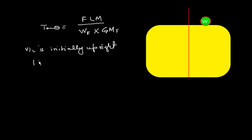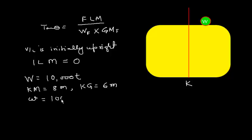That means initial list moment is zero because the vessel is upright. Here is K, the keel, and the displacement of the ship is 10,000 tons. KM is 8 meters, KG is 6 meters, and we have a weight of 100 tons located 5 meters from centerline and 10 meters from the keel.